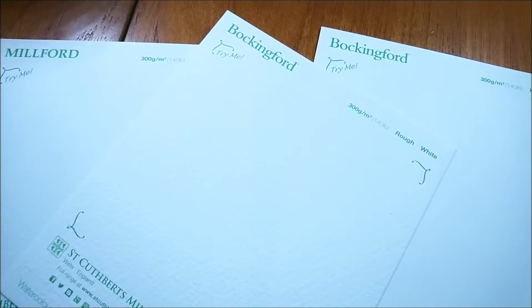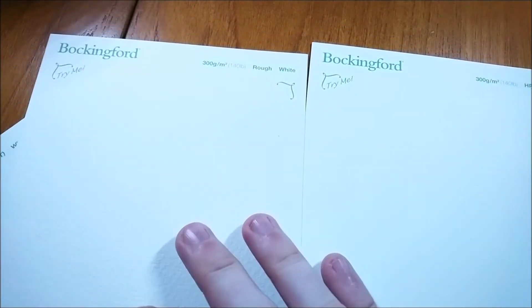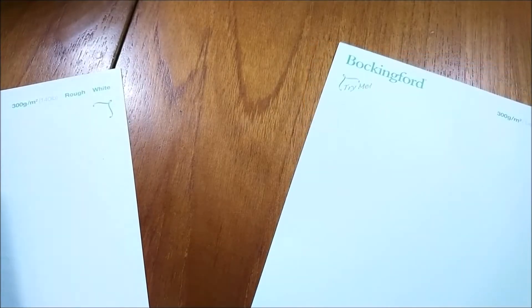So here's a close-up. I hope you can see some of the texture differences in the papers. These papers are from St. Cuthbert's Mill, based here in the UK. They produce the Saunders and the Bockingford range.